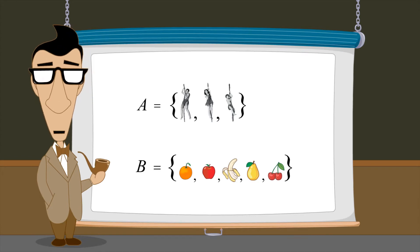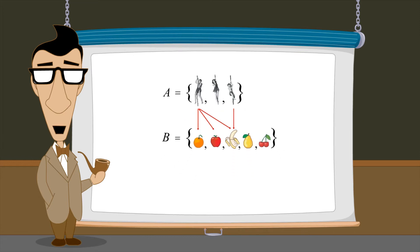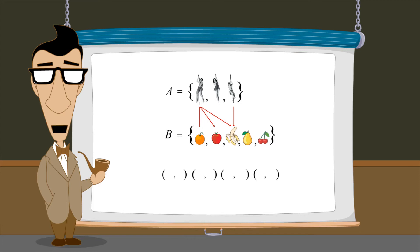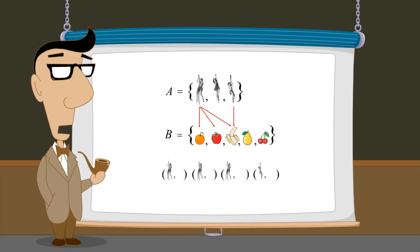For instance, we could draw arrows from each person in set A who likes fruit to the fruits in set B which they like. As we saw, the same information can be conveyed using ordered pairs where the first element of each ordered pair is a member of the first set and the second element is a member of the second set.